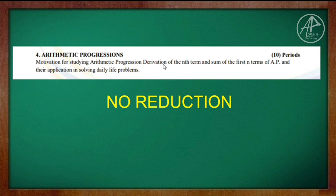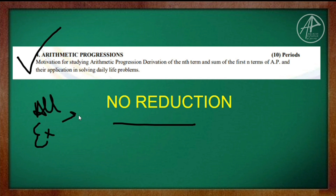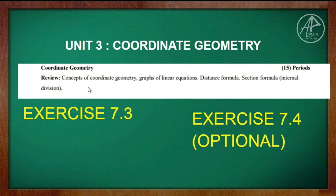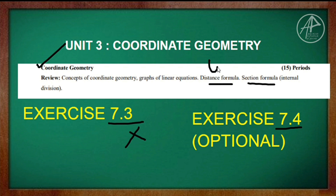Chapter 4 — Arithmetic Progressions — has no reductions; all exercises are to be done. Unit 3 is Coordinate Geometry. Exercises 7.3 and 7.4 are deleted. The remaining topics are the Distance Formula and the Section Formula, which are the key exercises to cover.